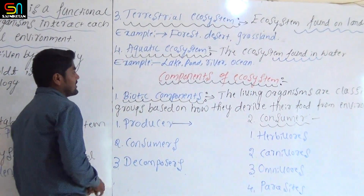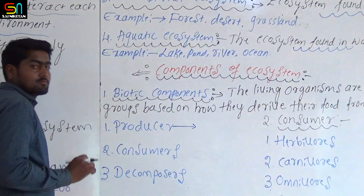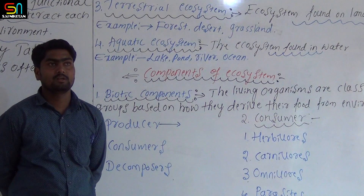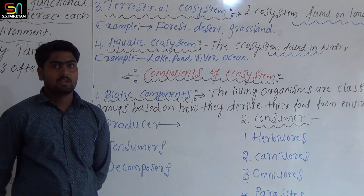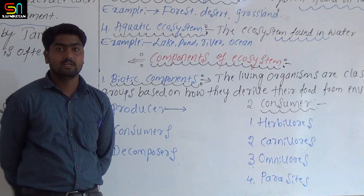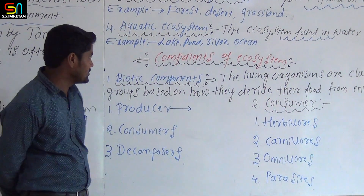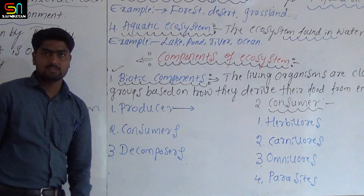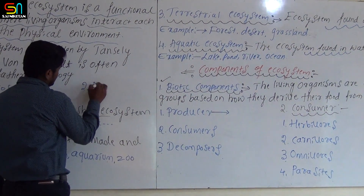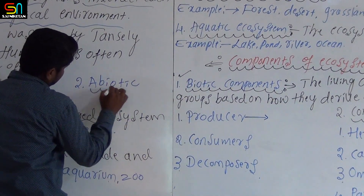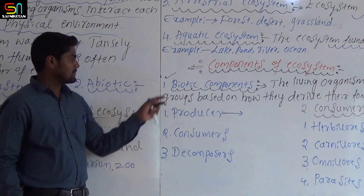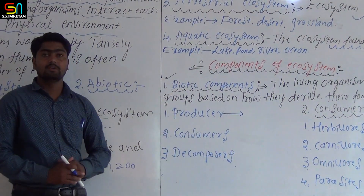Next aspect: components of ecosystem. There are two components of the ecosystem. First, the biotic component. Second, the abiotic component of the ecosystem.